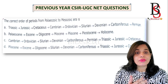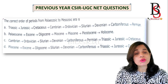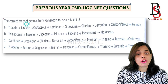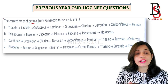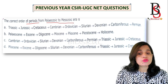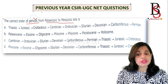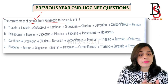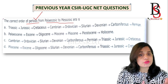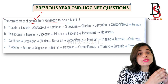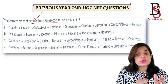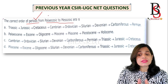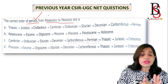Now we will see a previous year question. This question was asked in the June 2017 CSIR NET examination. The question asks for the correct order of periods from the Paleozoic to the Mesozoic era. The mnemonic for the periods is 'Camels Often Sit Down Carefully Perhaps Their Joints Creak Perhaps Not,' where 'Perhaps Not' covers the Cenozoic era — but this question is asking only from Paleozoic to Mesozoic.